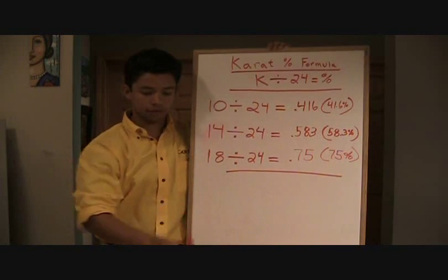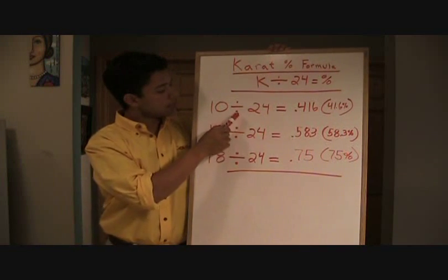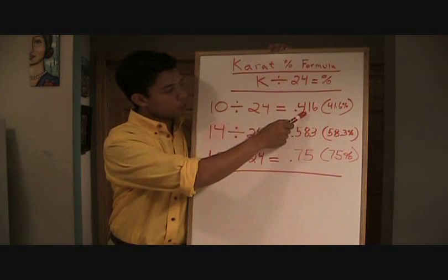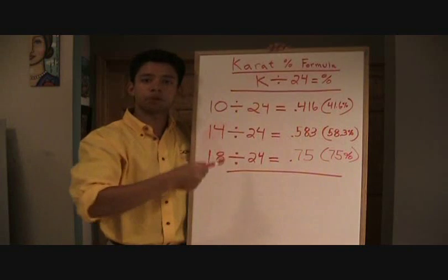Okay now if you have a watch or something that's 10 carat, you plug in 10 divided by 24 equals 41.6, so it's 41.6 percent pure.